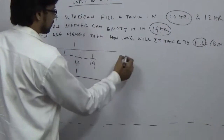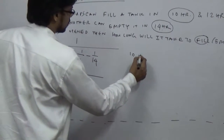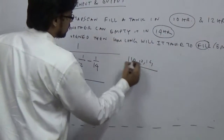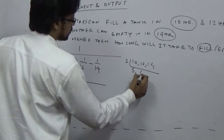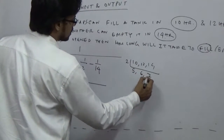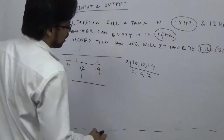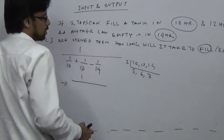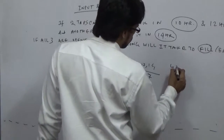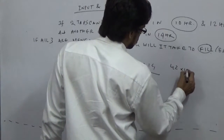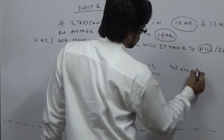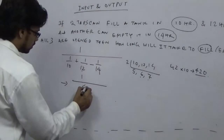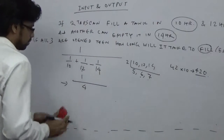What is the LCM of 10, 12, and 14? We get 2, 5, 6, 7 — so 6 times 7 is 42, times 10 is 420. So 420 is your LCM.